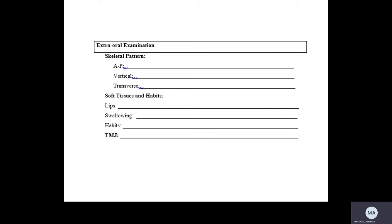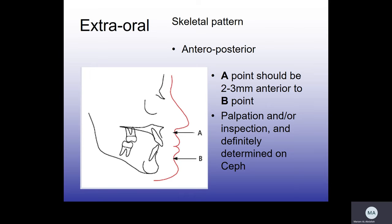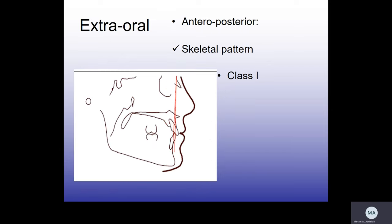For soft tissues and habits, you examine the lips, swallowing pattern, habits, and the temporomandibular joint. For the skeletal pattern in the anterior-posterior dimension, we look at A point and B point on the soft tissue profile. A point is the deepest concavity of the anterior surface of the maxilla; B point is the deepest concavity of the anterior surface of the mandible. A point should be 2 to 3 mm ahead of B point for a Class I skeletal pattern.